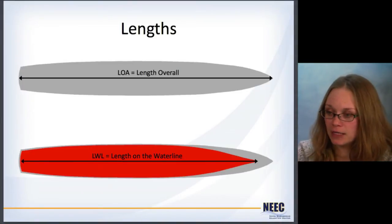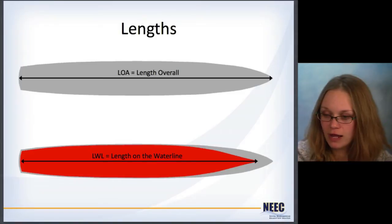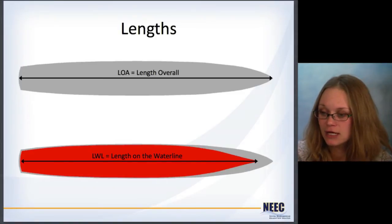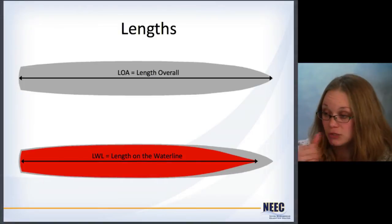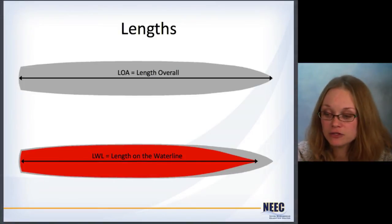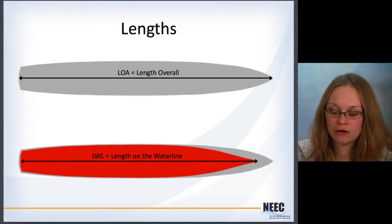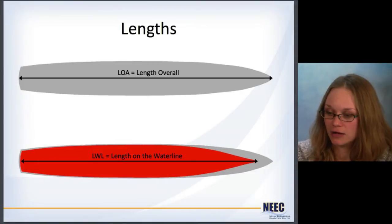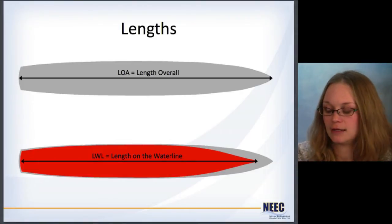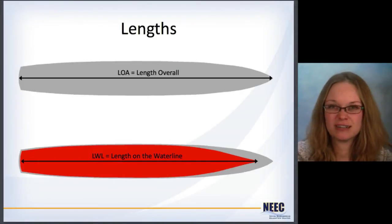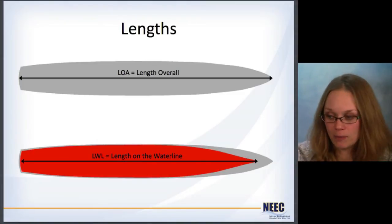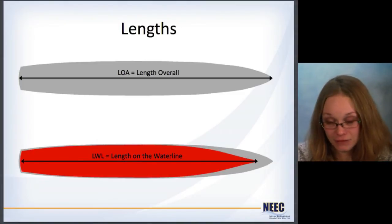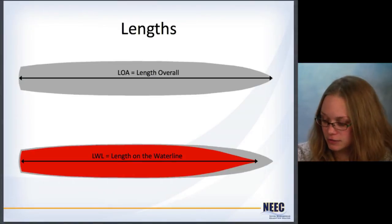Just to compare: here is an example of the length overall shown in gray as a horizontal slice. If you do the same thing but now on the waterline, you get the length on the waterline. You can see how different these are, and this would have an effect when you're doing calculations later on. If you're trying to get more accurate information on how the ship is going to behave in the water, this length on the waterline will give you a better representative length in your calculations.